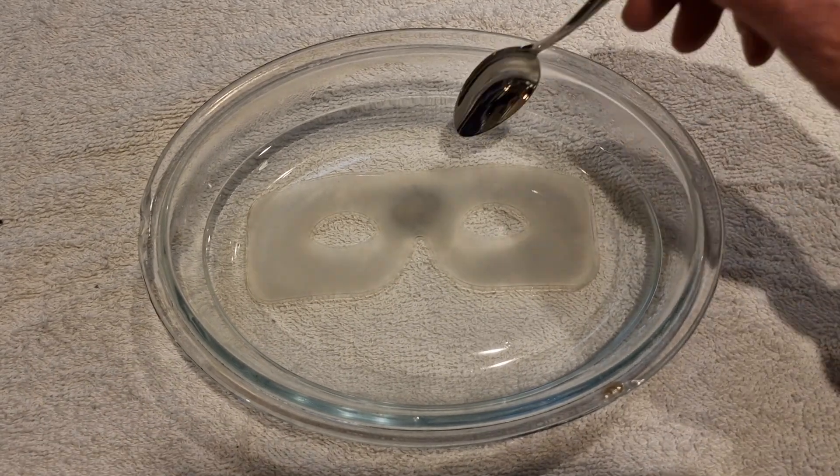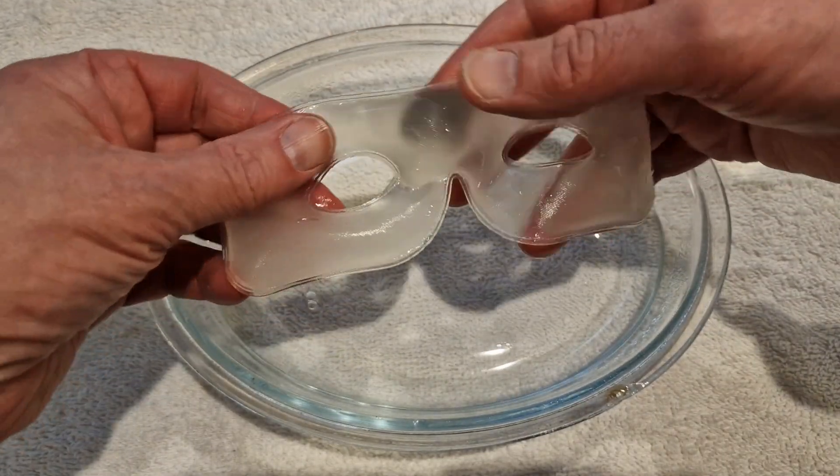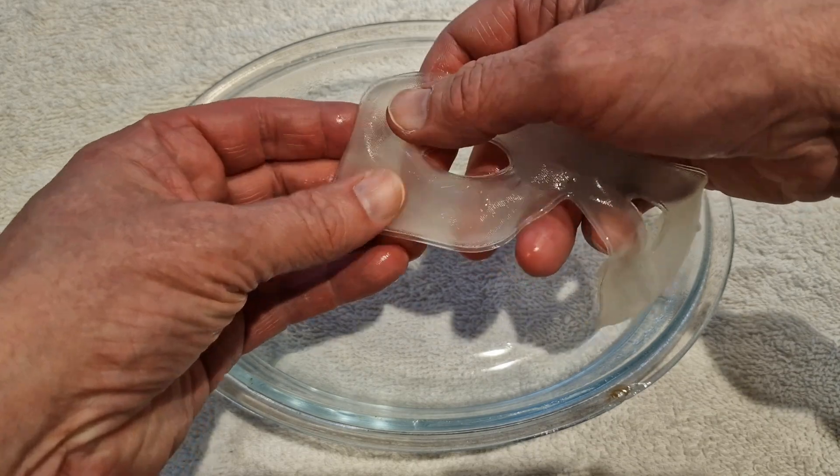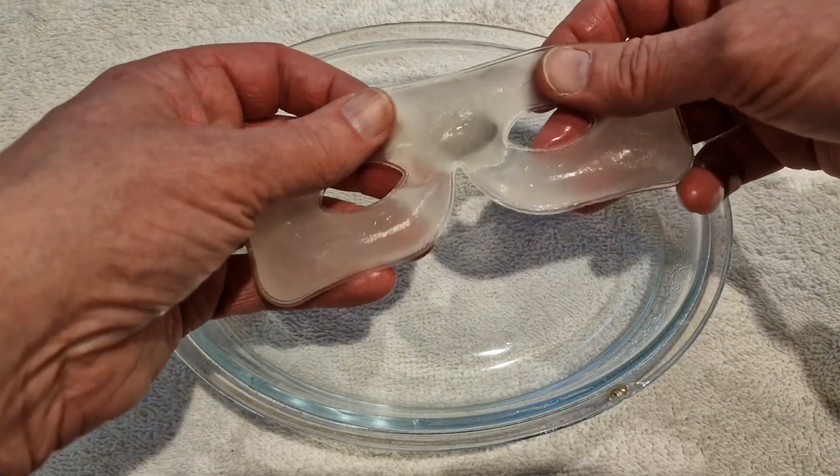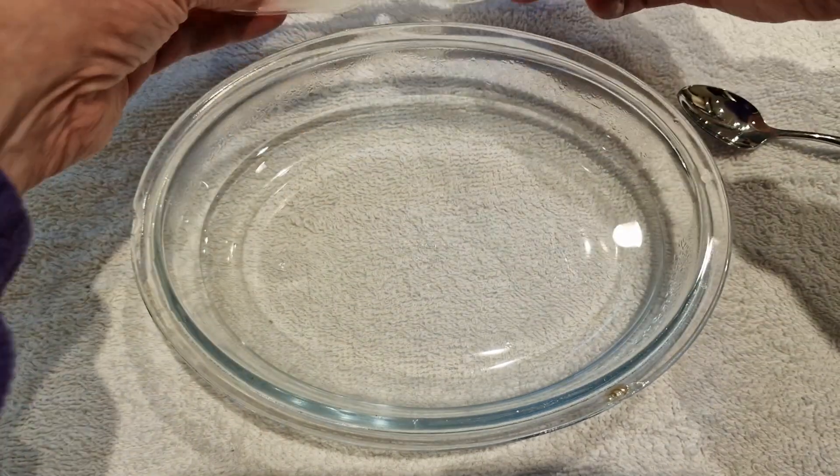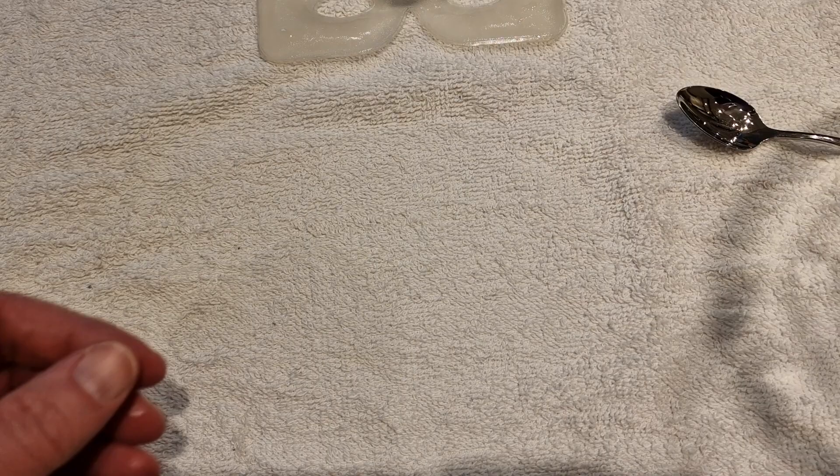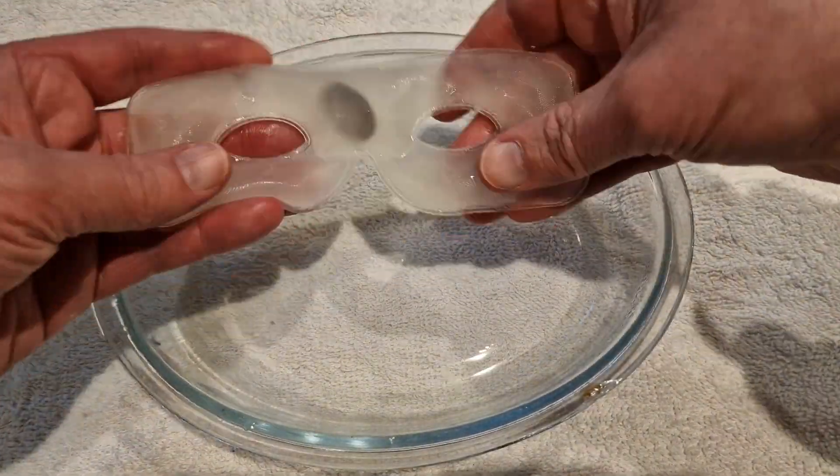Once it's been in the hot water for a while, you can take it out and manually mix it. I can feel some grittiness in the liquid here, which means it's not completely reset. So at this point, take it out and replace the water with fresh boiling water so that it's well mixed.